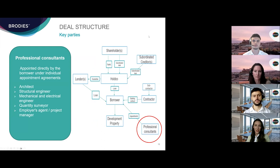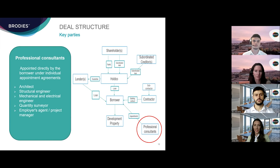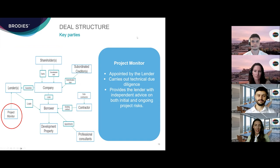On large-scale commercial developments, the contractor typically uses subcontractors to perform some or all of the works. From the lender's perspective, the lender does have a degree of control over the choice of building contractor and will typically have requirements regarding the contractor's technical ability, relevant experience, and financial standing. The contractor will often enter into subcontracts with subcontractors, each taking responsibility for a specific aspect of the construction and in some cases design.